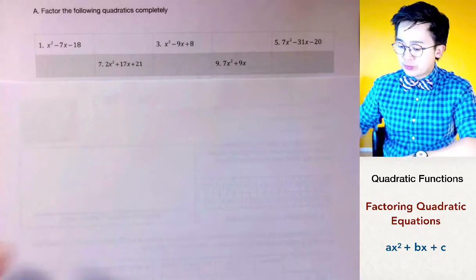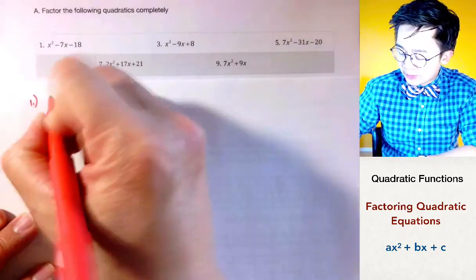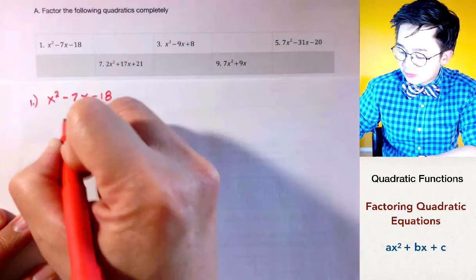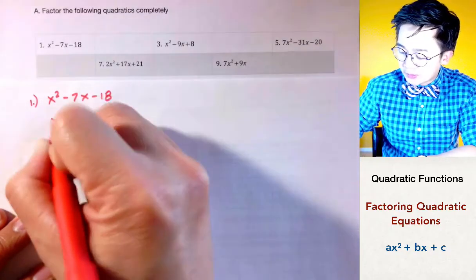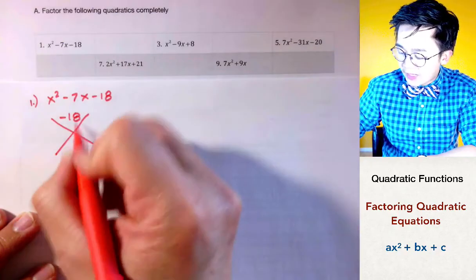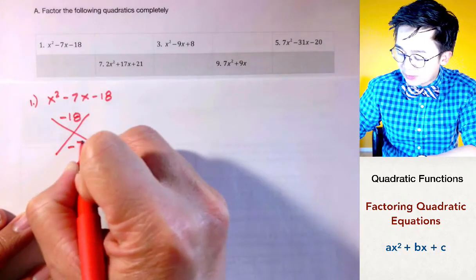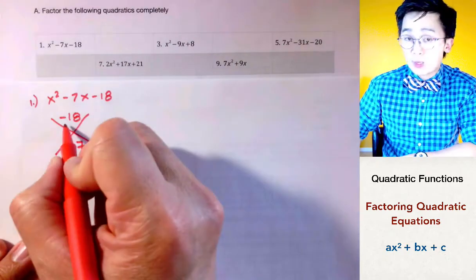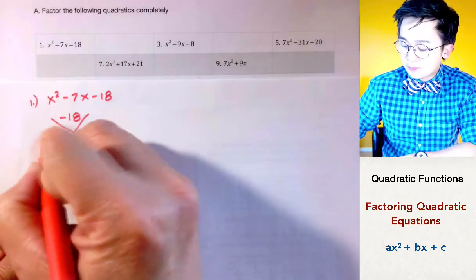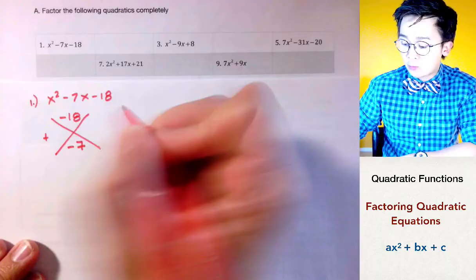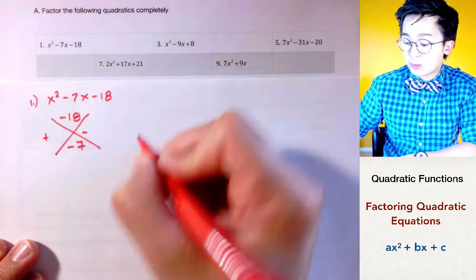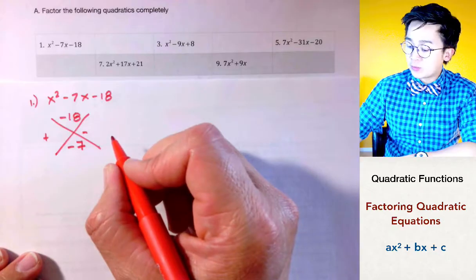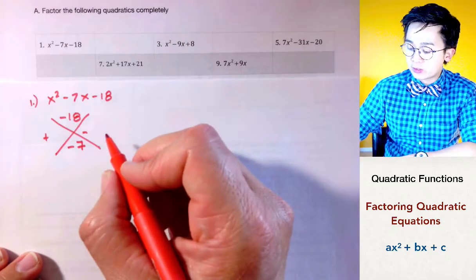For problem number 1 we have x squared minus 7x minus 18. Factoring will be simple because all we need to do is find the factors of negative 18 that give you negative 7 when you add them up. To get a negative product, one factor will be positive and the other negative. The two factors that give you negative 7 when added would be 9 and 2.